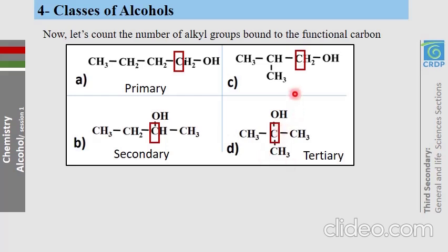Now it's your turn — what is the class of the last alcohol? Only one alkyl group is attached to its functional carbon, so it is a primary alcohol.